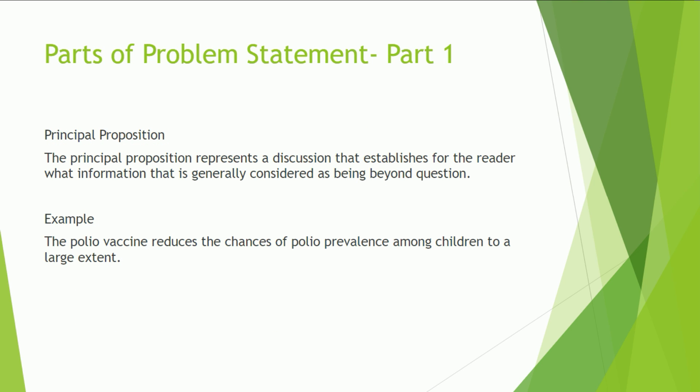The first part is the principal proposition. In the principal proposition, we give something which is already established — there is no doubt or question about it. For example, if we are conducting research on polio, the principal proposition could be: the polio vaccine reduces the chance of polio prevalence among children to a large extent. This is established worldwide — polio has been largely eradicated with the help of the polio vaccine.